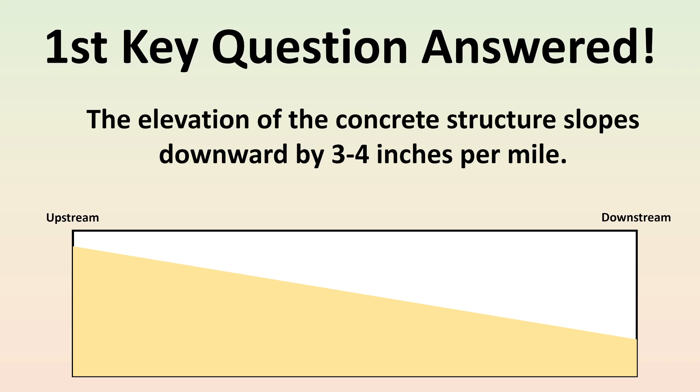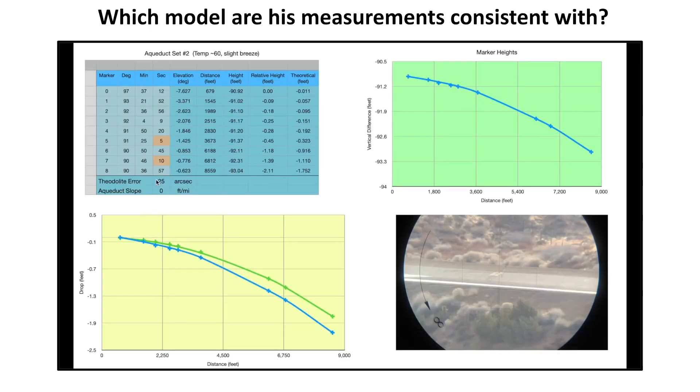All right, that's the first key question answered. So according to the survey benchmarks, and the supporting documentation that JT cited, the elevation of the concrete structure slopes downward by three to four inches per mile. Which means now we can analyze the actual measurements he took.